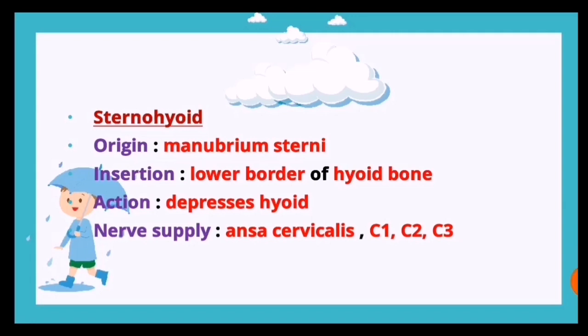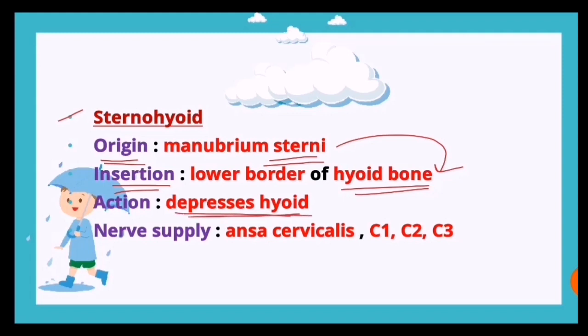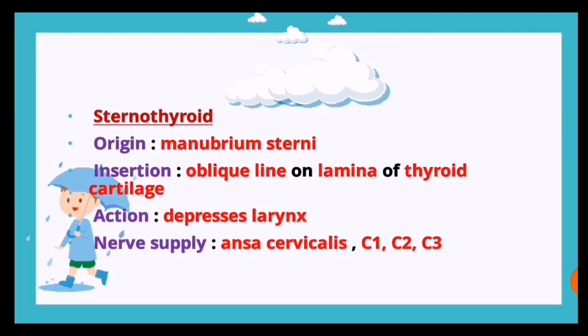The sternohyoid: origin is the manubrium sterni, insertion is the lower border of the hyoid bone, action is it depresses the hyoid, and nerve supply is by the ansa cervicalis - C1, C2, and C3.